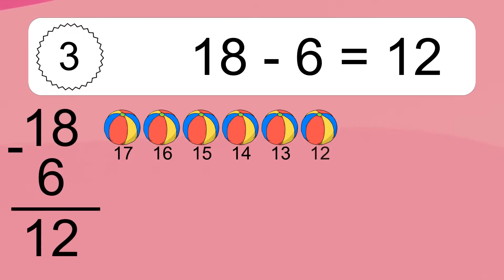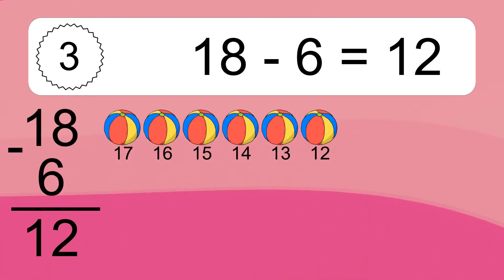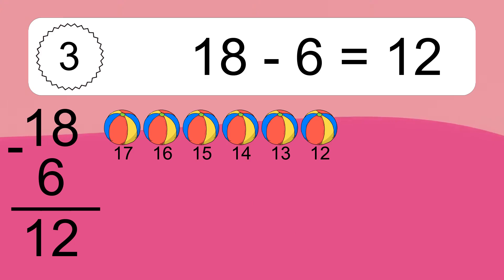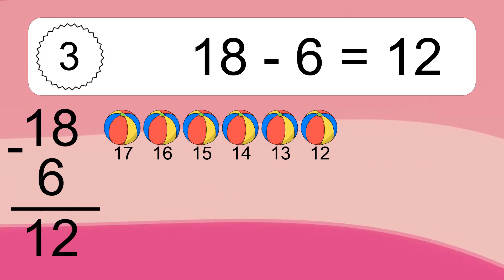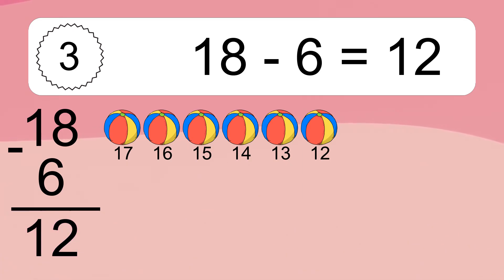18 minus 6 equals what? 18 minus 6 equals 12. Let's count it: 17, 16, 15, 14, 13, 12.